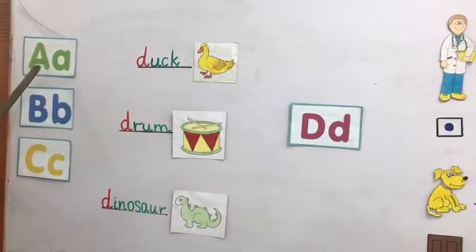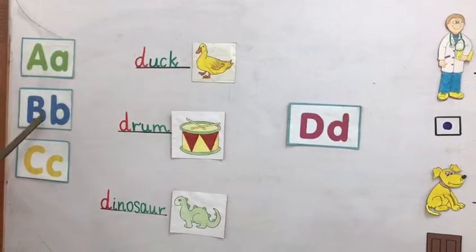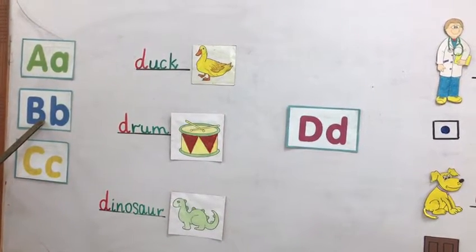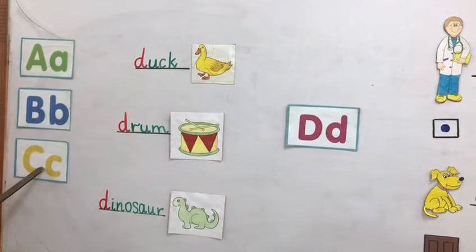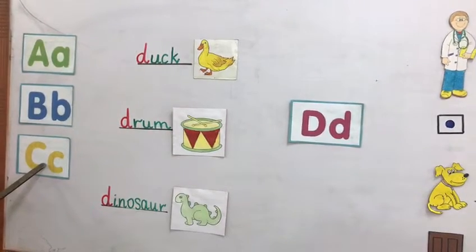Previous letter A — A says F. B — B says P. C — C says Kh.